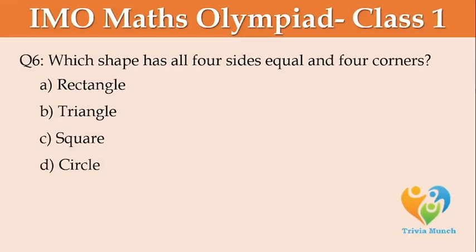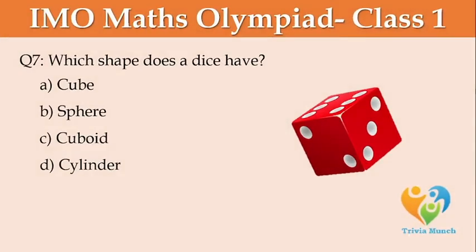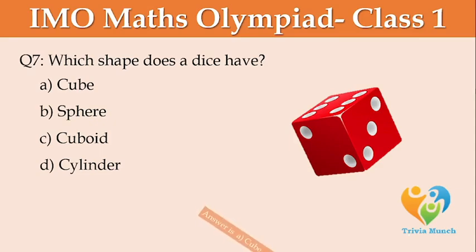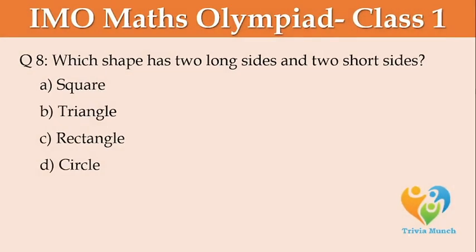Which shape has all four sides equal and four corners? Option A: Rectangle, Option B: Triangle, Option C: Square, Option D: Circle. Which shape does a dice have? Option A: Cube, Option B: Sphere, Option C: Cuboid, Option D: Cylinder. Which shape has two long sides and two short sides? Option A: Square, Option B: Triangle, Option C: Rectangle, Option D: Circle.